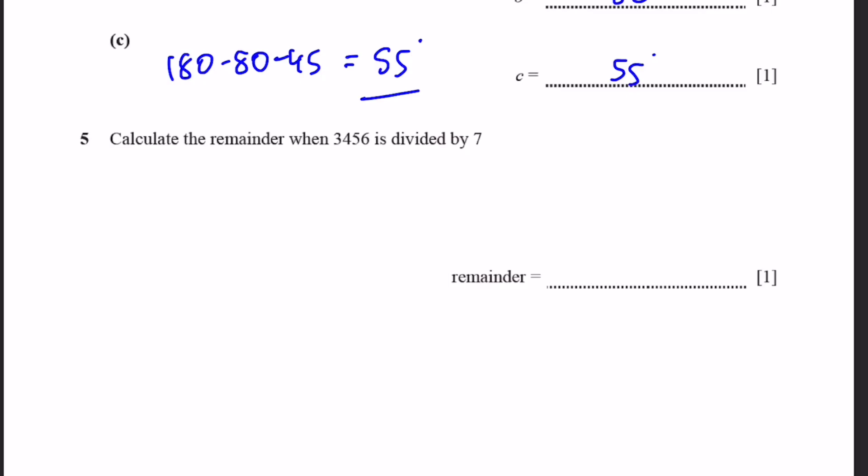Question 5. Calculate the remainder when 3,456 is divided by 7. So let's actually divide it. 3,456 by 7. We'll get 493. 4 times 7 is 28. Subtract, we get 6. We bring down the 5. We'll get 9. So that'll be 63. Subtract, we get 2. Bring down the 6. And we have 3. 21. And we get 5. And this 5 is the remainder. That's the answer.